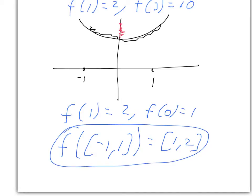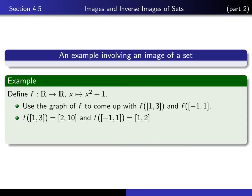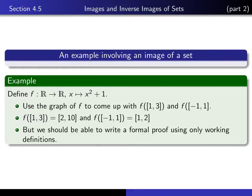So those are the results. We deduced from the picture that the image of [1, 3] is [2, 10], and the image of [minus 1, 1] is the interval from 1 to 2. But that's just a picture, and even though we know in our heart that that's the answer, we should still be able to write a formal proof using only working definitions. It's a good exercise in writing proofs and working with working definitions.